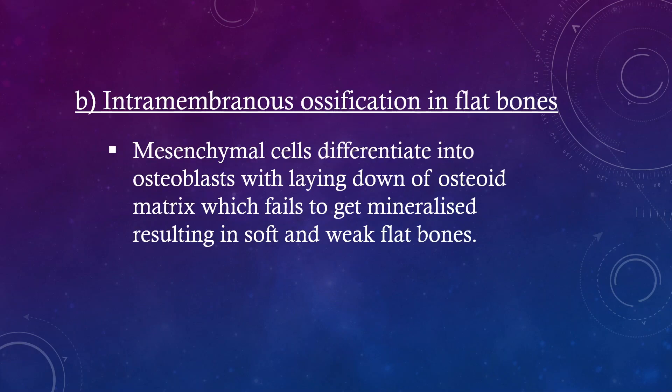Intramembranous ossification in flat bones: Mesenchymal cells differentiate into osteoblasts with laying down of osteoid matrix, which fails to get mineralized, resulting in soft and weak flat bones.